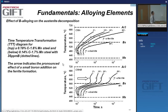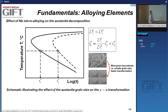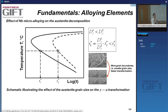Never forget that TTT diagrams are not only a function of composition — they will be different depending on the microstructure. Two important microstructural features of the austenite before it transforms are grain size — whether smaller or larger — and whether the austenite is deformed.